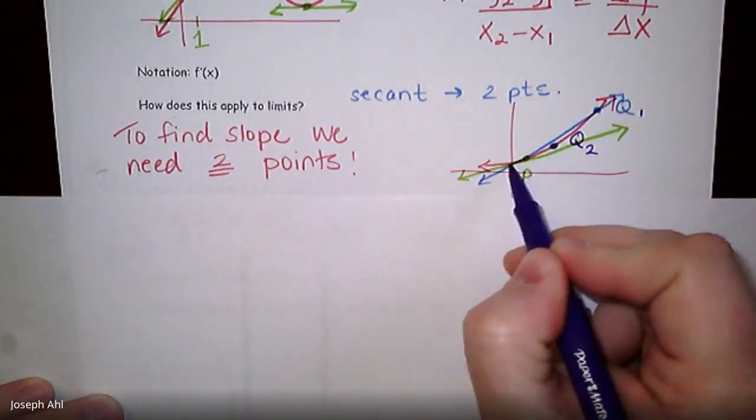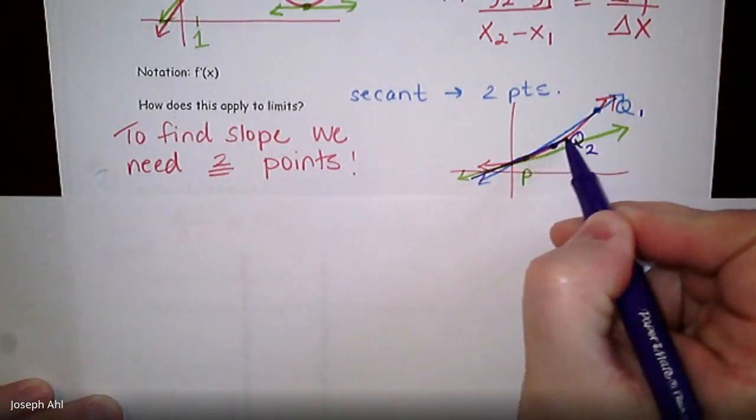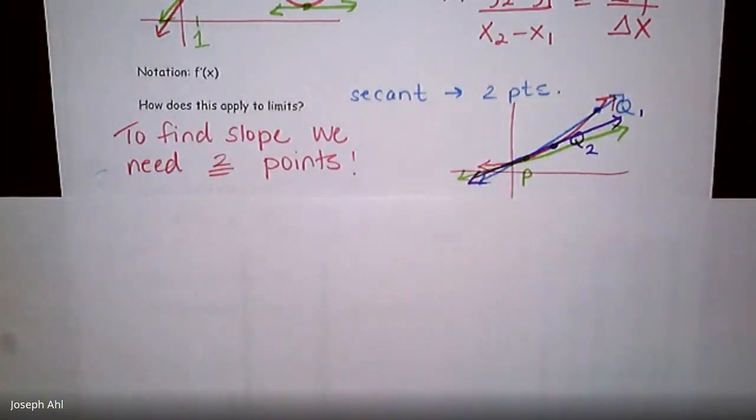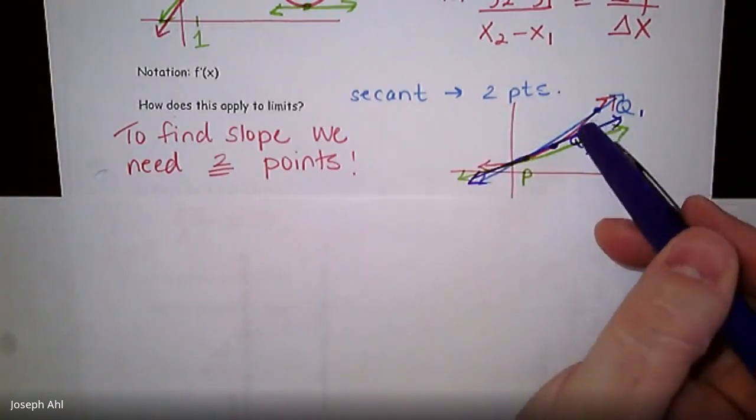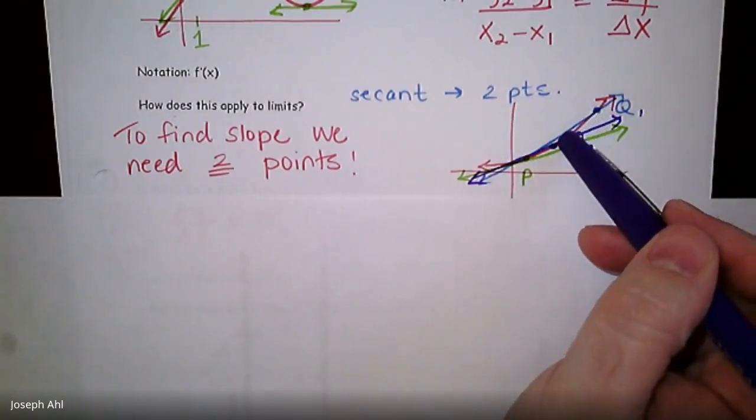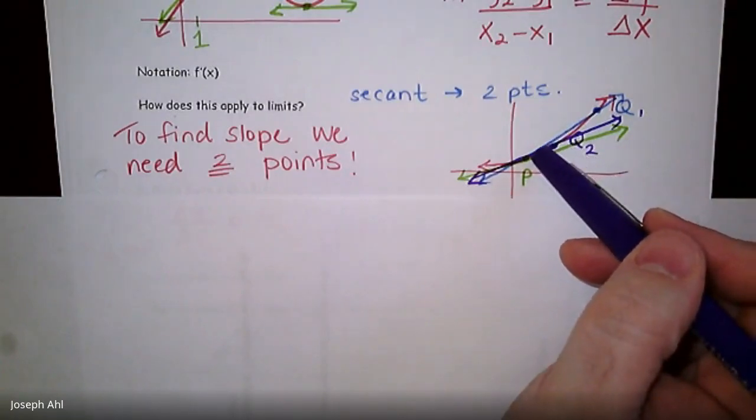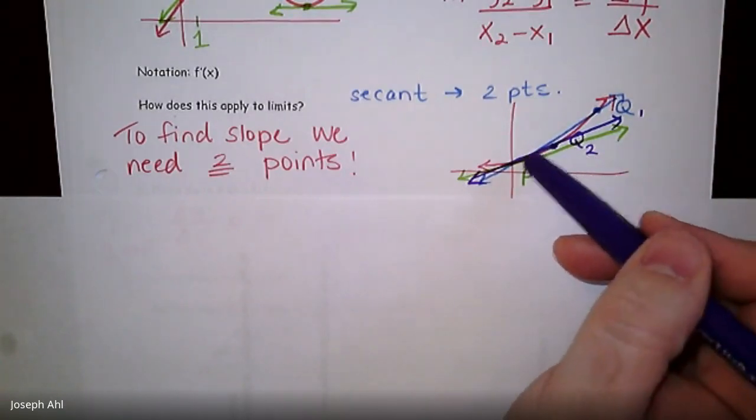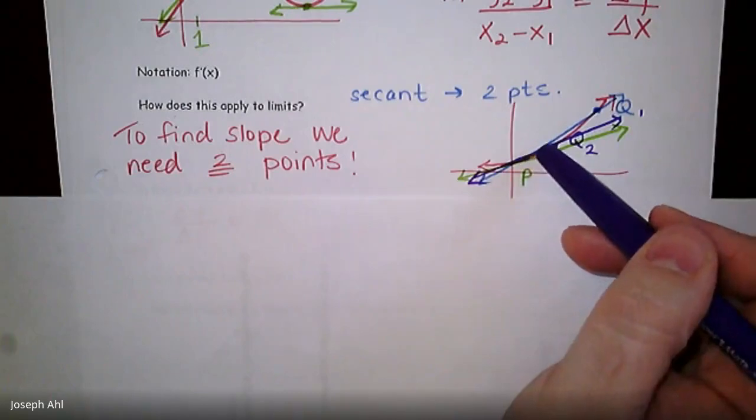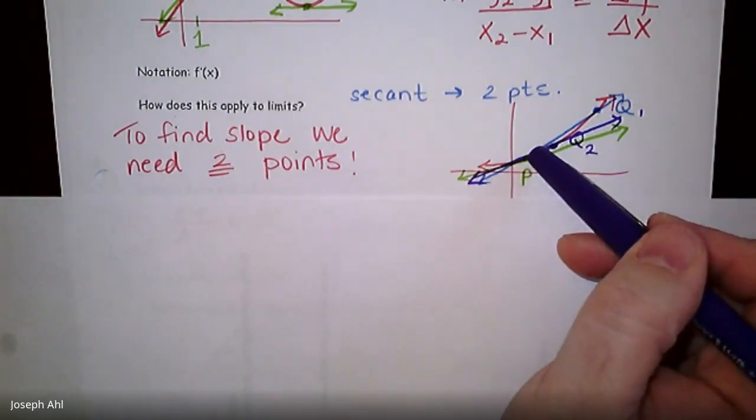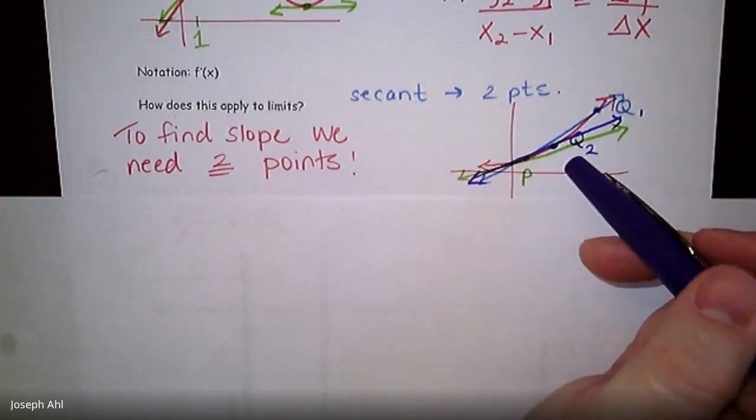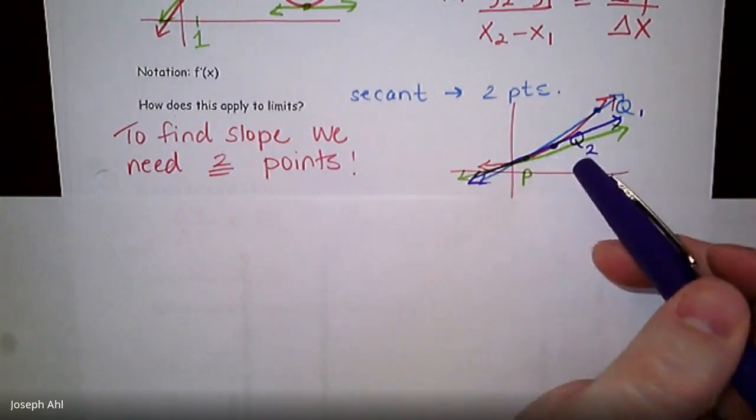Wouldn't the slope between Q2 and P be even a better and more accurate representation of just the slope that connected Q1 and P? So the whole idea here would be we want to take this point Q and kind of slide it as close as we can get to point P such that we can still find the slope between two given points. But we can get really, really, really close to point P and then calculate that slope with a fair amount of accuracy there.